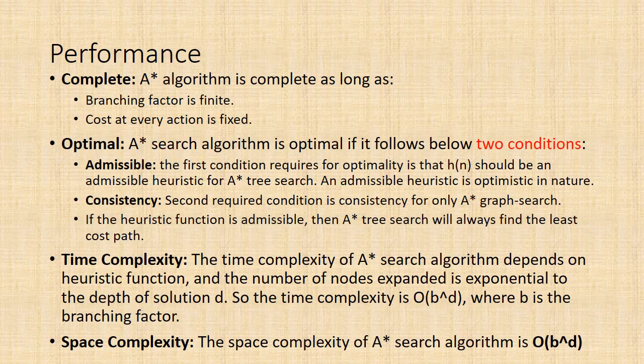The performance measures of A* search are: A* algorithm is complete as long as branching factor is finite and cost at every action is fixed. A* search algorithm is optimal if it follows two conditions: Admissible - the first condition requires for optimality is that h(n) should be an admissible heuristic for A* tree search. An admissible heuristic is optimistic in nature. Consistency - the second required condition is consistency for only A* graph search. If the heuristic function is admissible, then A* tree search will always find the least cost path. The time complexity of A* search algorithm depends on the heuristic function, and the number of nodes expanded is exponential to the depth of solution d. So the time complexity is O(b^d), where b is the branching factor. The space complexity of A* search algorithm is O(b^d).